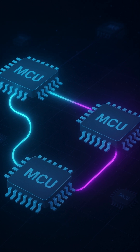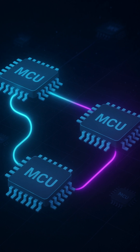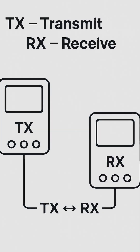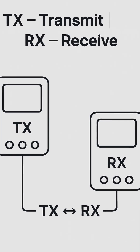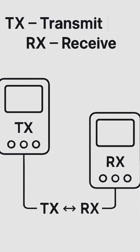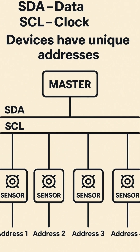How do sensors talk to microcontrollers, or boards talk to each other? Meet UART, I2C, and SPI — the three kings of embedded communication. First up: UART, Universal Asynchronous Receiver Transmitter. It uses just two wires — one to transmit (TX) and one to receive (RX). It's simple, point-to-point, and perfect for serial communication, like between your Arduino and a GPS module.